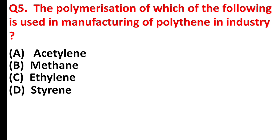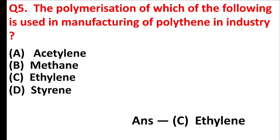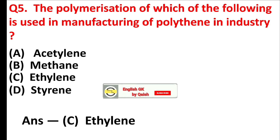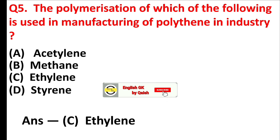The polymerization of which of the following is used in manufacturing of polythene in industry? Answer is Option C: Ethylene.